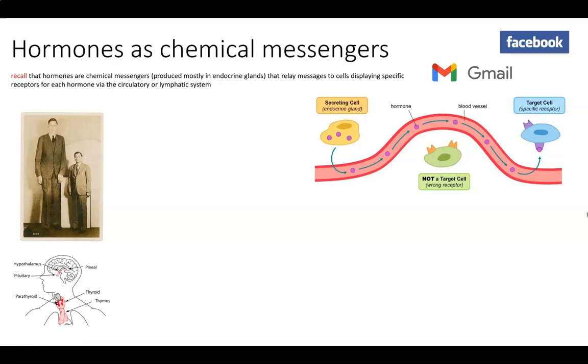The endocrine system is slower to initiate but has a more prolonged response compared to the nervous system. If you think about after a fight or flight response, even hours after the event or fright, your hands might still be shaking, your heart's still pounding. That's because adrenaline is still pumping throughout your body.